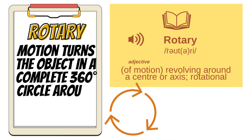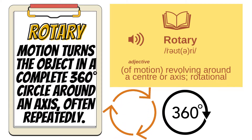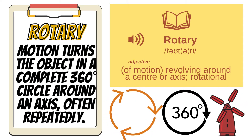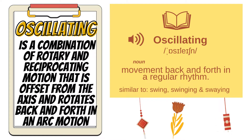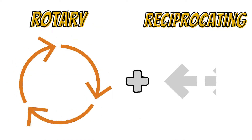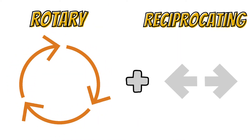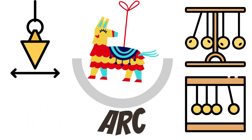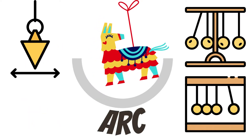Rotary motion turns the object in a complete 360-degree circle around an axis, often repeated. Oscillating is a motion that repeats itself. It is a combination of rotary and reciprocating motion that is offset from the axis and rotates back and forth in an arc motion.